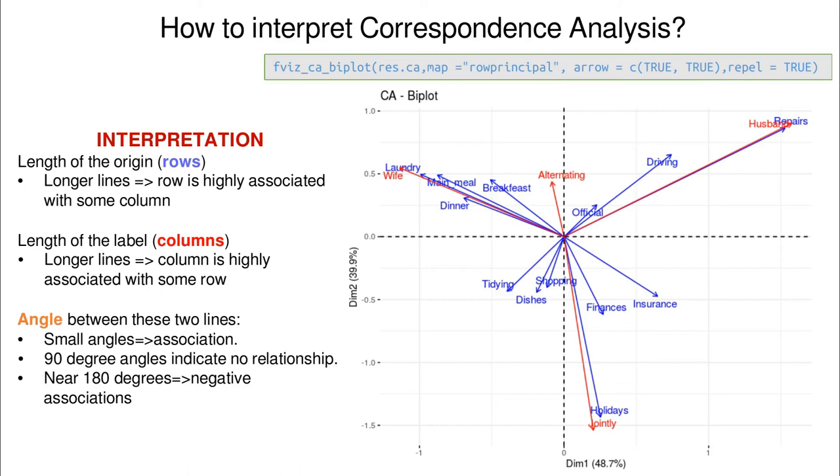And remember that now the difference between correspondence analysis and PCA is that now rows and columns are arbitrary classification. So now the angle is going to give us a lot of information. So small angles means a strong association. Angles close to 90 degrees is going to indicate no relationship at all. And angles close to 180 degrees is going to be related to negative associations. So you can see here we have a small angle between the blue and the red. So there is a cute angle, meaning a strong association between holidays and jointly. Here we have almost a 90 degree angle. So that means that tidying and jointly tasked together are not discriminating against each other. So I cannot learn anything looking at tidying and looking at jointly. And here you have a super small angle. So you have a super strong association between husband and repairs.